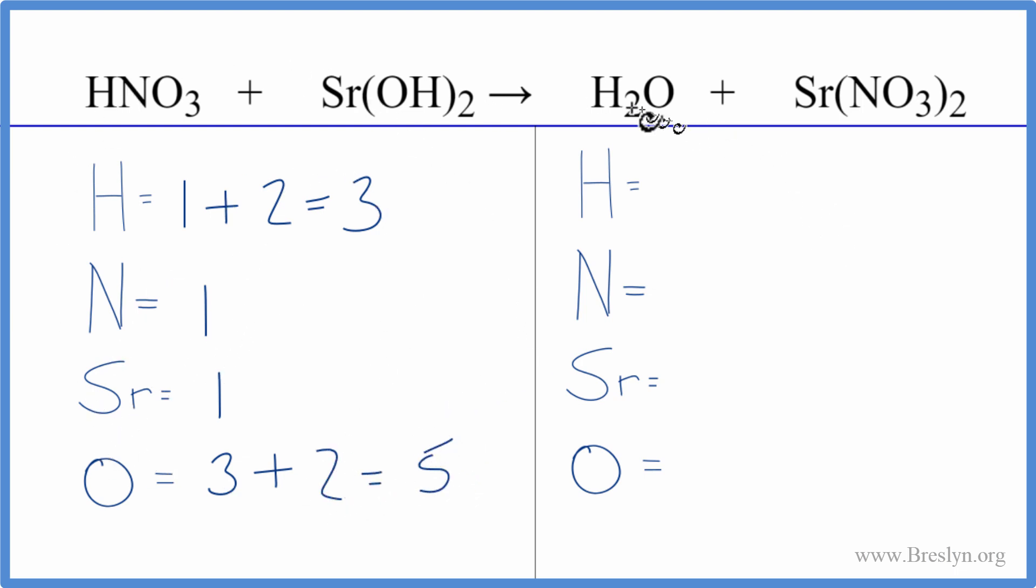On the product side, we have two hydrogens, two times the one nitrogen, two of those, one strontium, and then oxygens. We have the one here, plus we have two times three. That gives us six. So we have seven oxygen atoms.